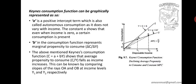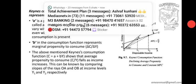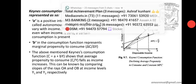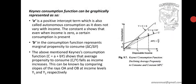The second component is B. B in the consumption function represents the marginal propensity to consume — MPC. So in the equation C is equal to A plus B times Y, B is the MPC.